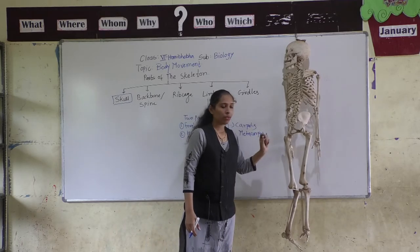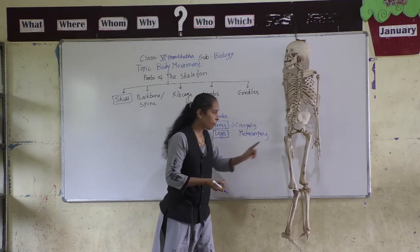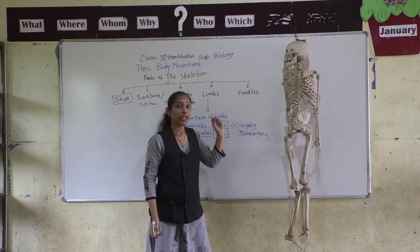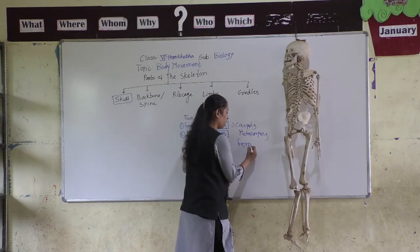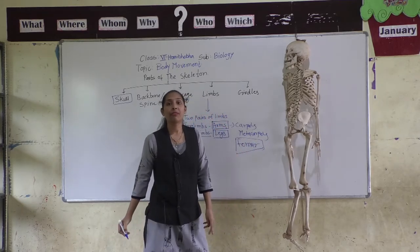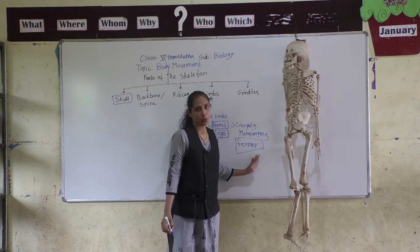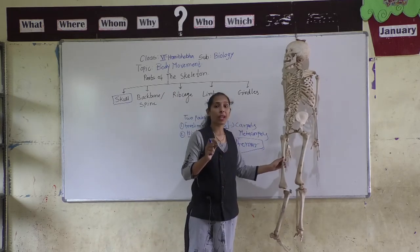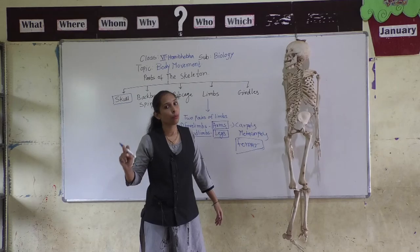The legs or hind limbs also have two parts. The upper part has only one bone, and the name of that bone is Femur, also called the thigh bone. The femur is the longest bone in the human body.